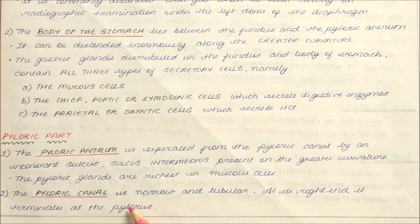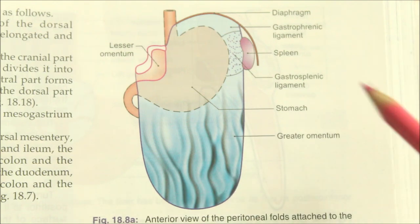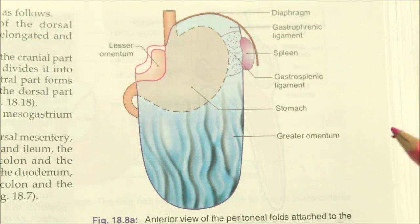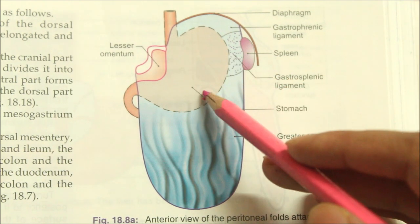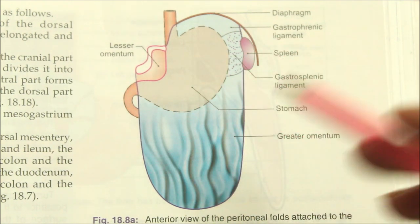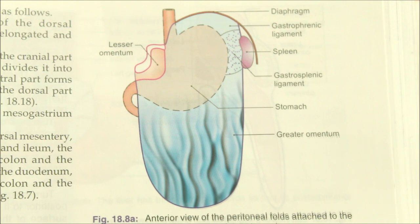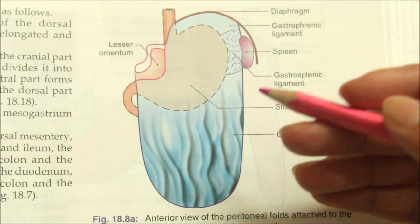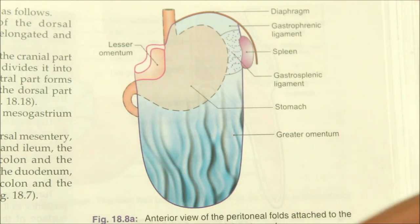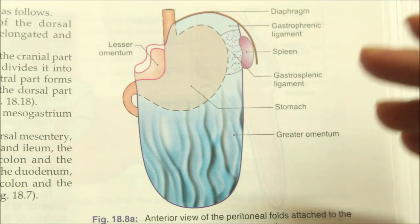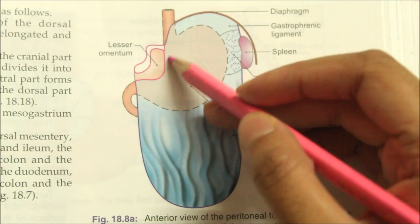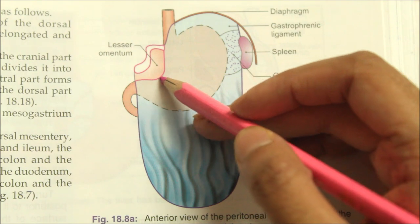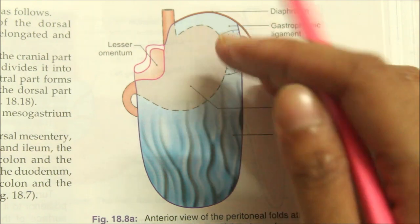Moving on to the relations of the stomach, looking first at the peritoneal relations: the stomach is lined by peritoneum on both its surfaces. The peritoneum is a large serous membrane lining the abdominal cavity. At the lesser curvature, the layers of peritoneum lining the anterior and posterior surfaces meet and become continuous with the lesser omentum.